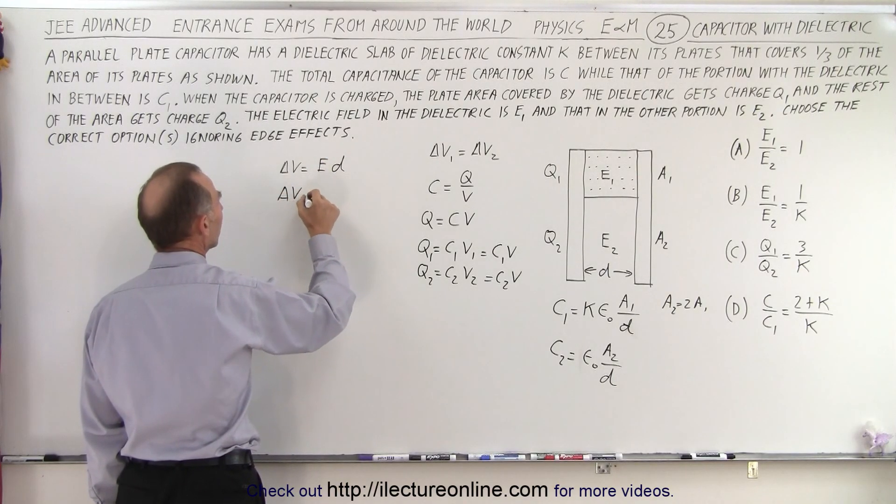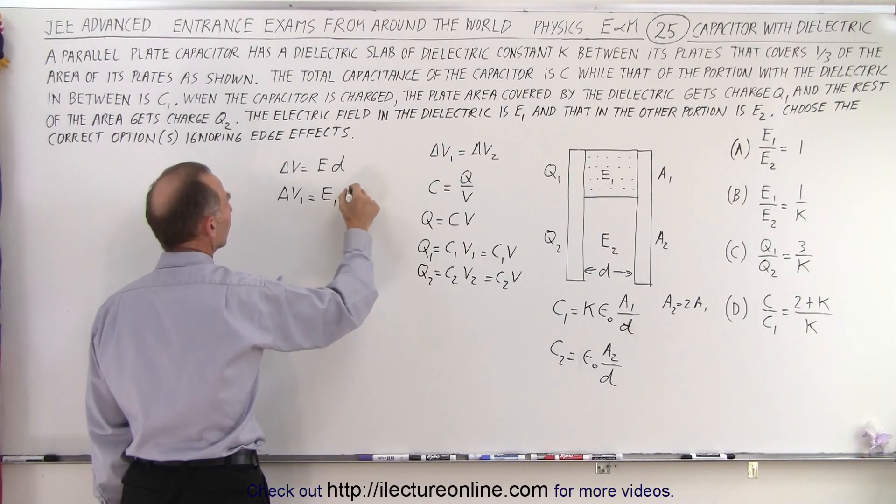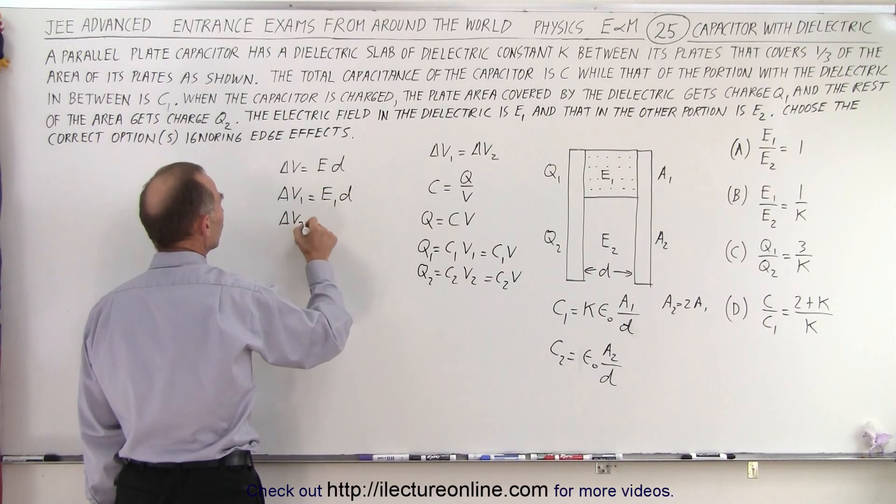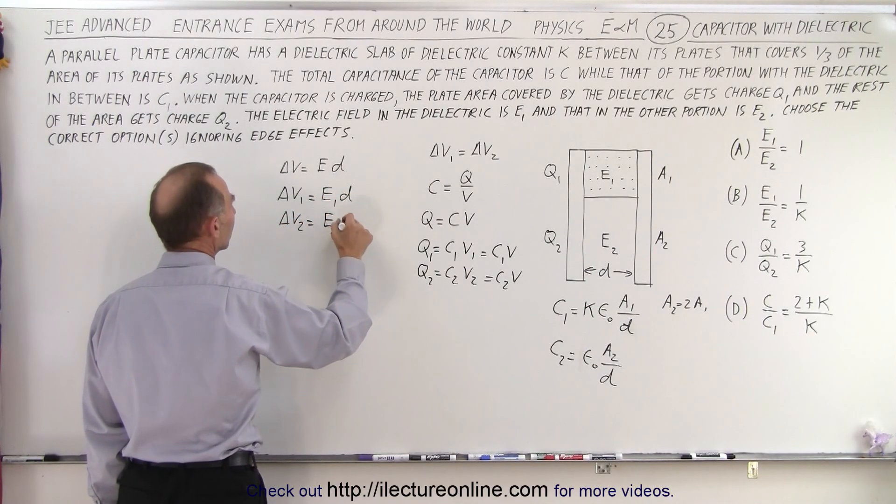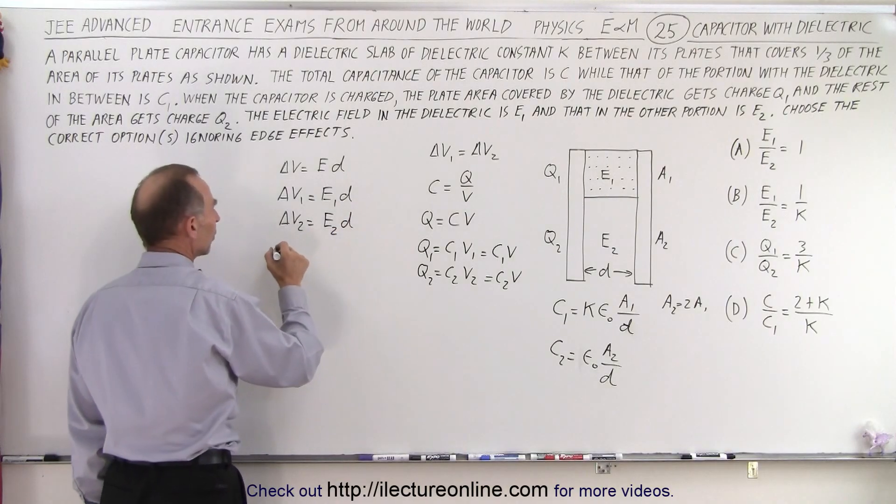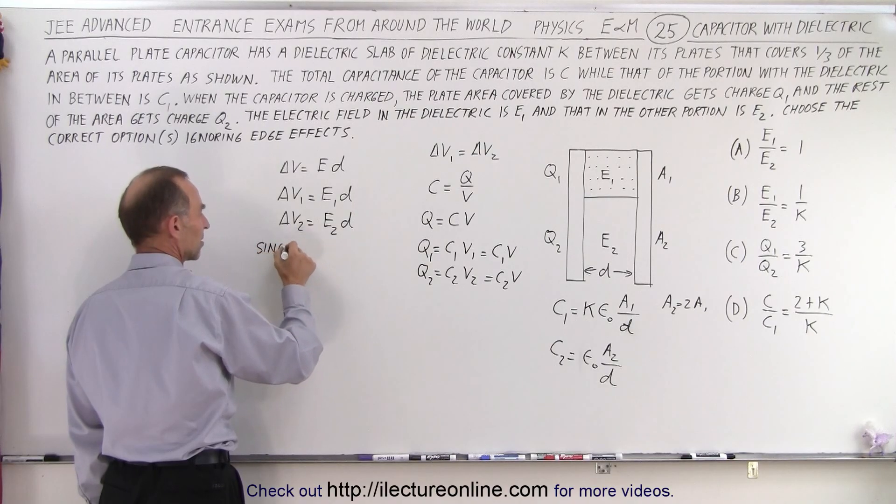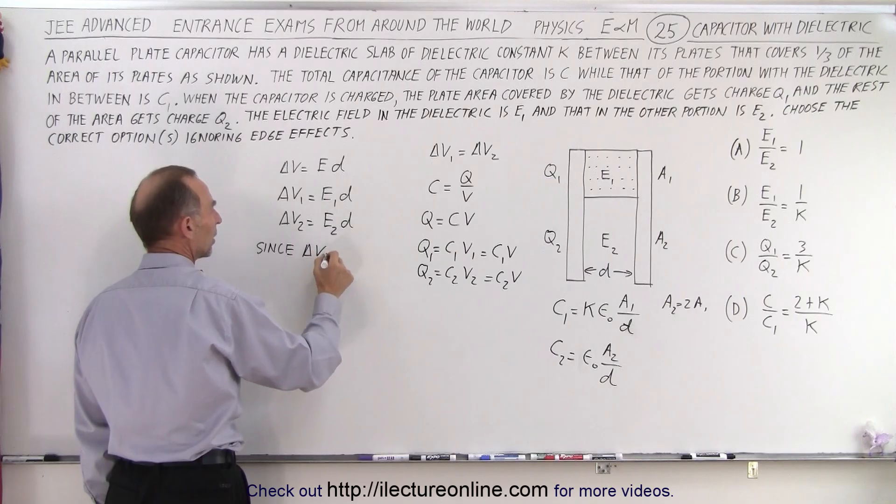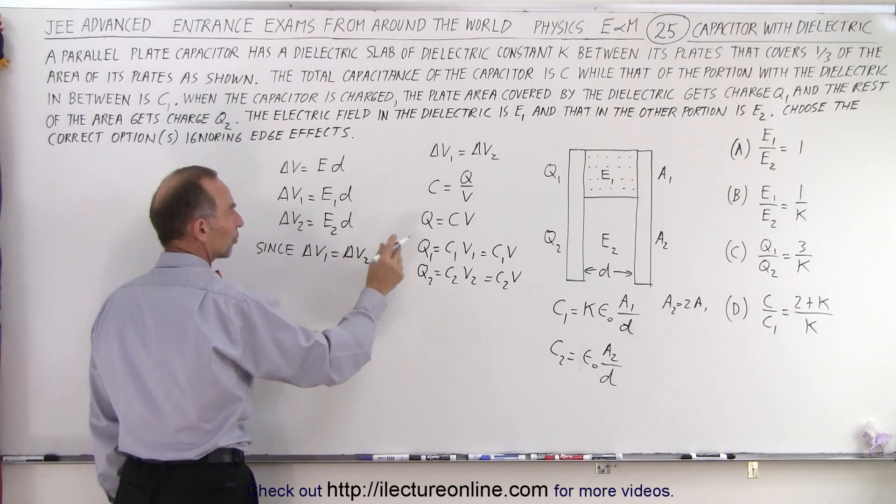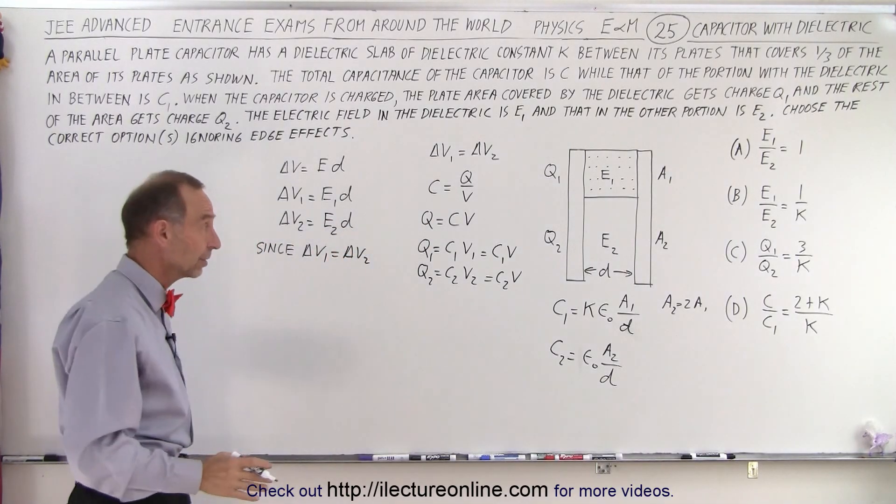So that means that delta V1 is equal to E1 times D, and delta V2 is equal to E2 times D. But since delta V1 equals delta V2, which has to be for that capacitor.